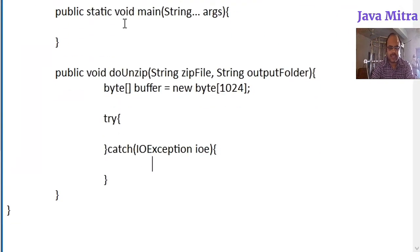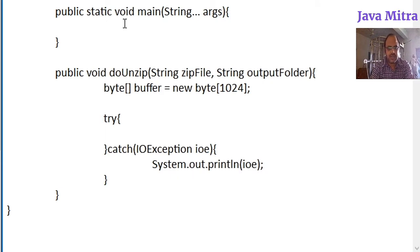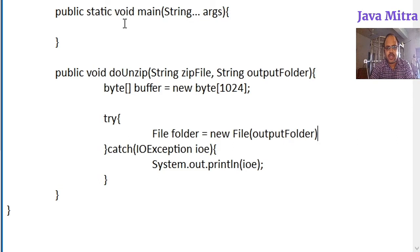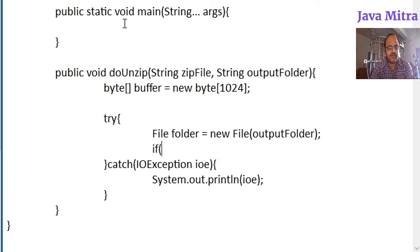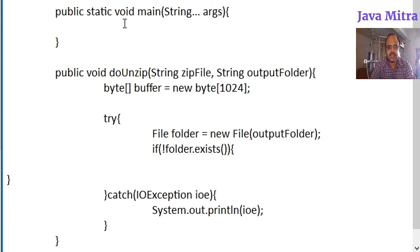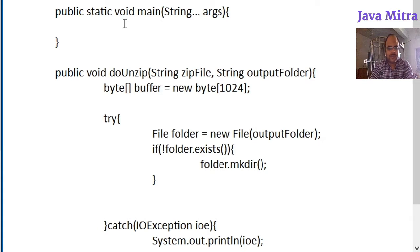In the catch block we print the exception. In the try block, we check if the folder exists. If it does not exist, we have to create it. So we make a File object for the output folder and check that if this folder doesn't exist, we create it with the help of the mkdir() method. In this way we create our destination folder if it doesn't already exist.